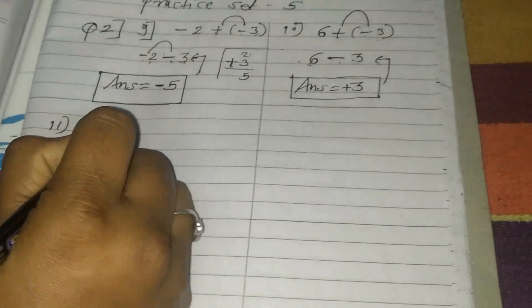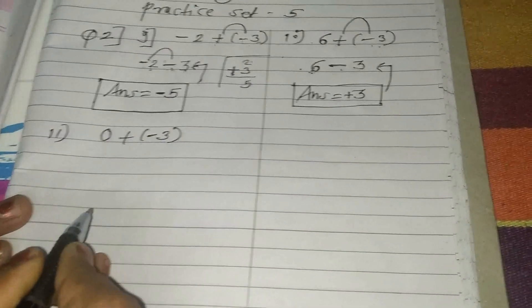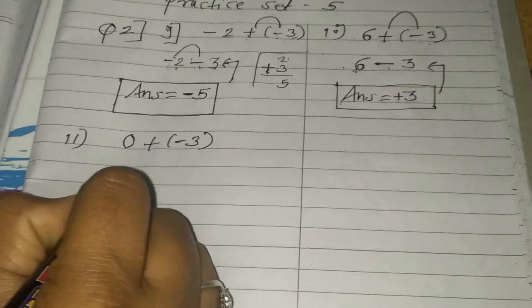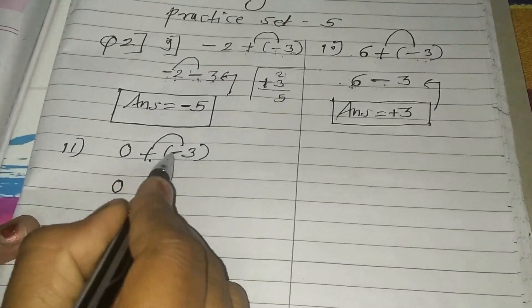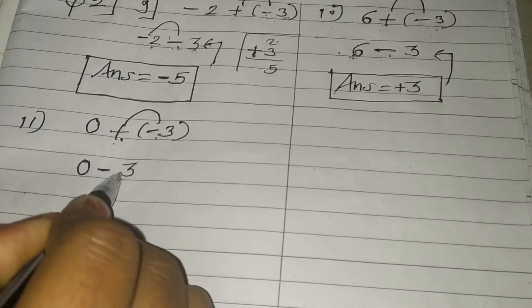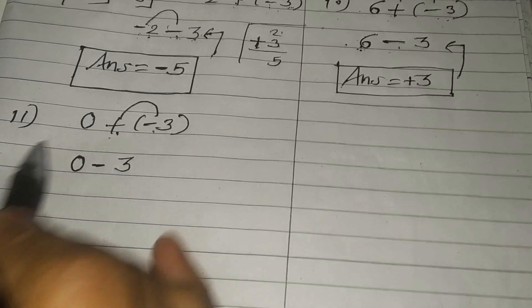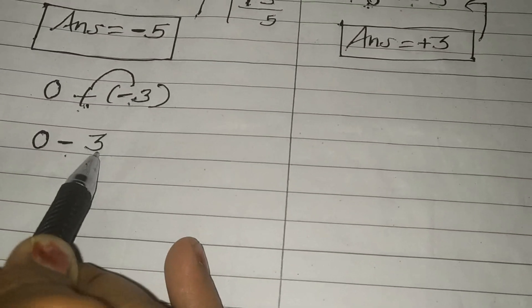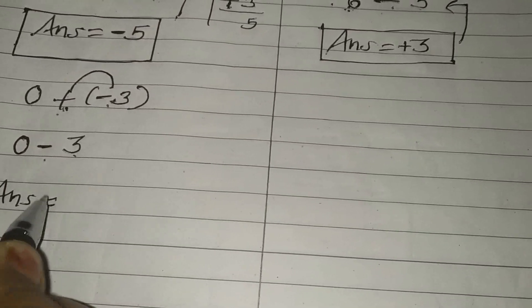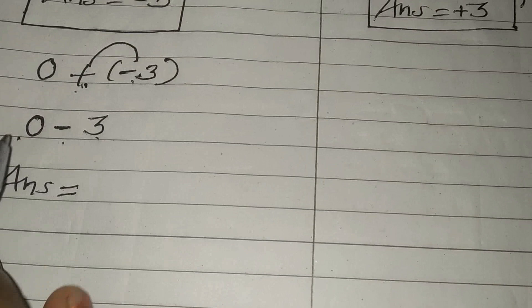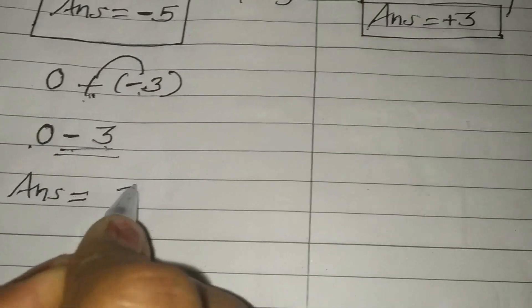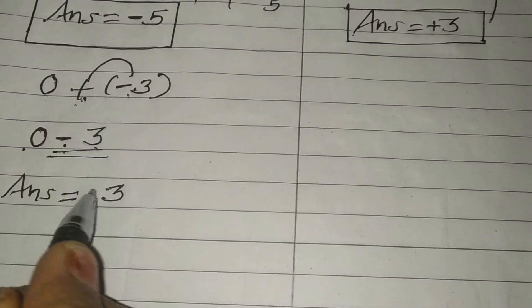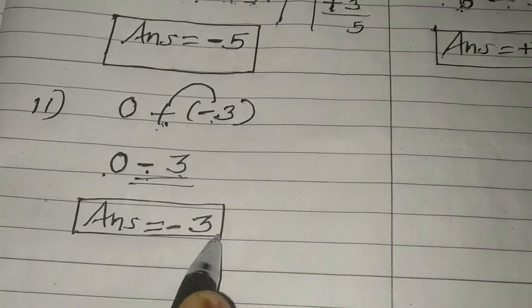Now we take problem number 11: 0 plus minus 3. Write first number as it is. Your plus minus becomes different sign — different sign subtraction — so minus 3. We well know that when we subtract any number from 0, or add any number to 0, the answer will be that number as it is. So the answer is minus 3.